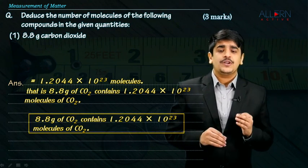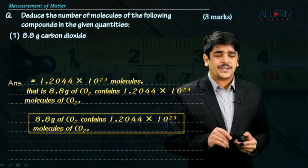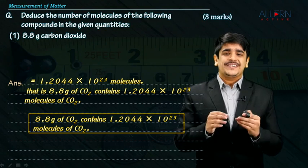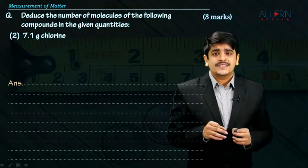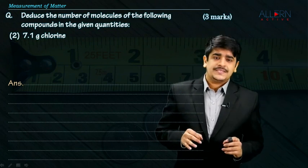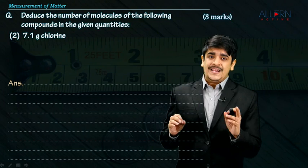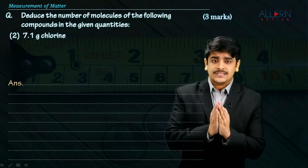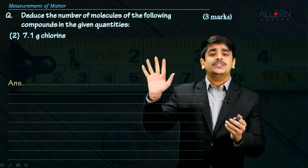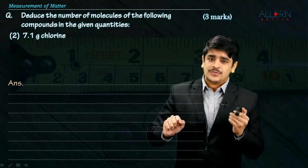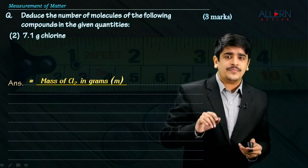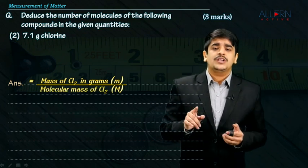That brings us to the end of the first part. We have a second part which flows in exactly the same manner. We have 7.1 grams of chlorine. Now think carefully — chlorine is a diatomic gas. It is not given by the formula Cl; it is given by the formula Cl₂. The first thing I should do is calculate the number of moles of chlorine, and for that I need the molecular mass of chlorine.